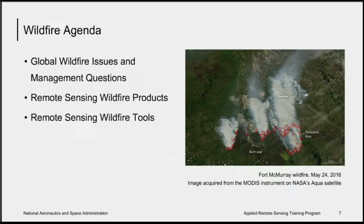Thank you, Brock, and thank you all for being here today. This week we will discuss the issues related to wildfires globally and how remote sensing can be used to address management issues. We will provide examples of specific products available for wildfires, such as the MODIS Thermal Anomalies product. We will also introduce online tools that can be used to identify active fires and to download data that can be used for burned area mapping.